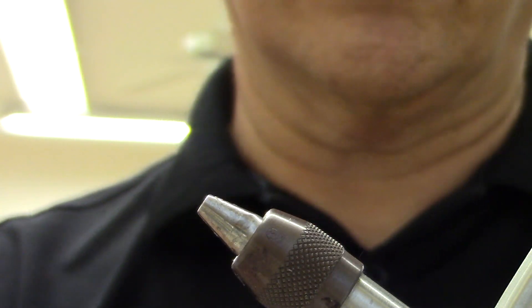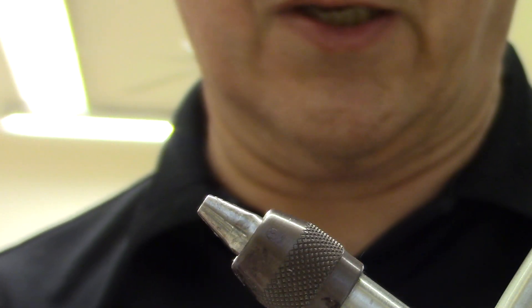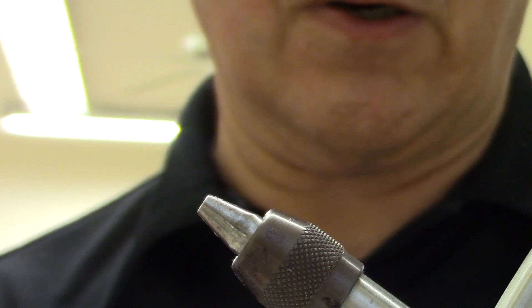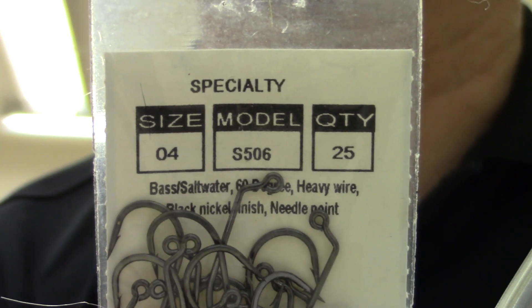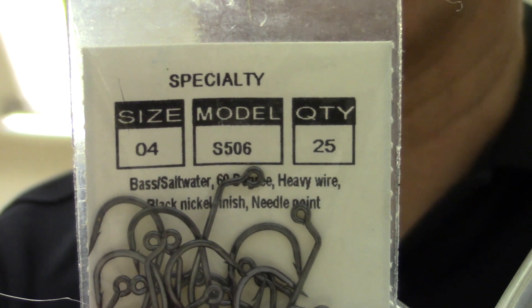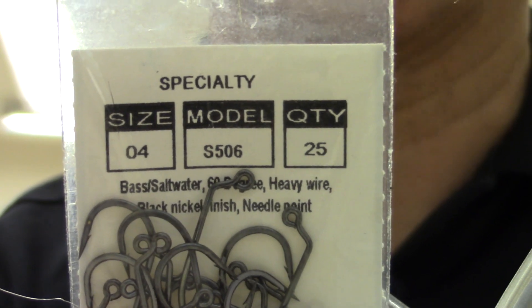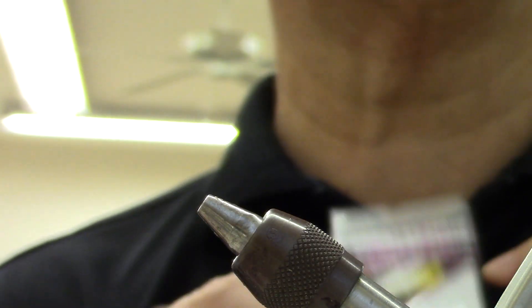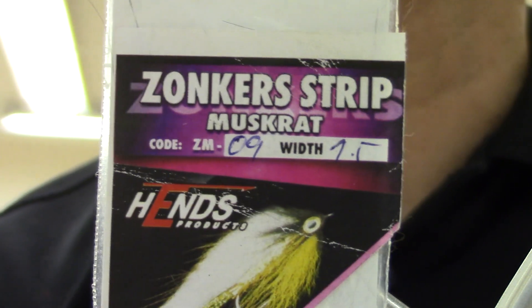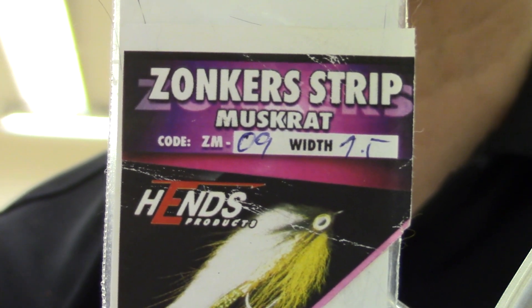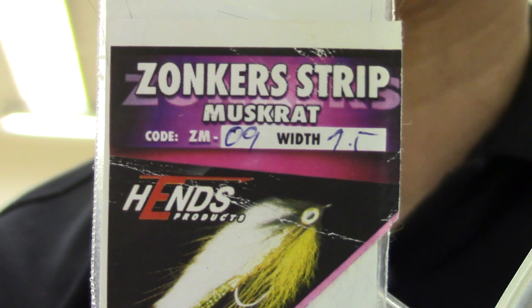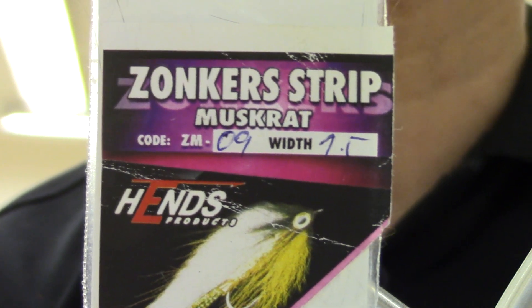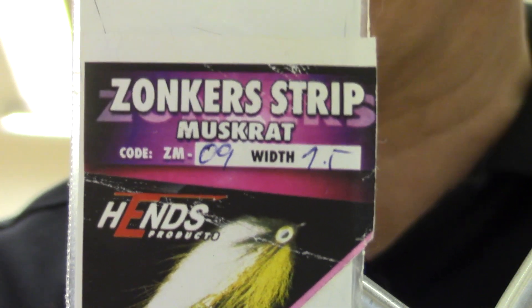So what you're going to need to do this is, I'm using a size 4 Unqua S as in Snake 506 hook. I'd use bigger ones if we had them, but we didn't have any here, so this is what I'm going with. For our tail, I'm going to use something a bit different. I'm going to use some Muskrat Zonker Strip. The reason I'm using the Zonker Strip, Muskrat, easy for me to say, is because Mike Adams.